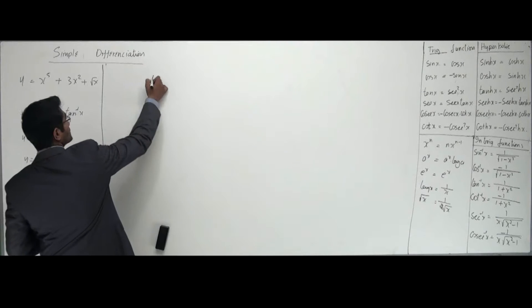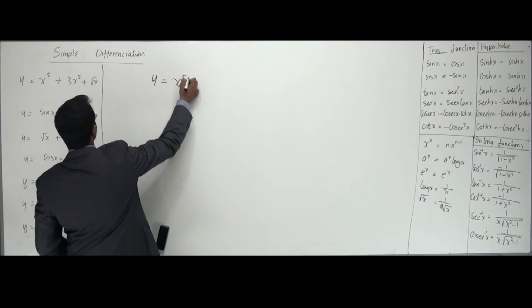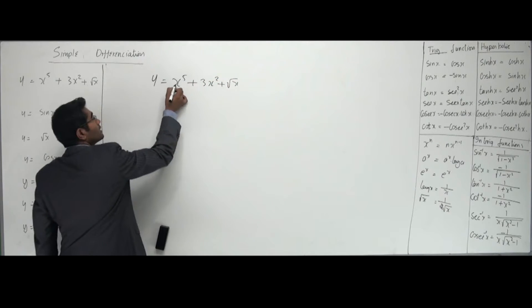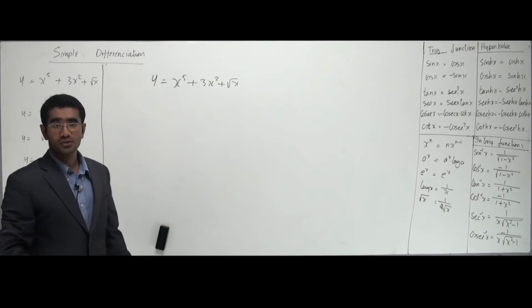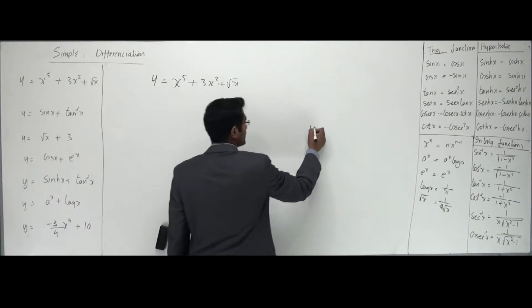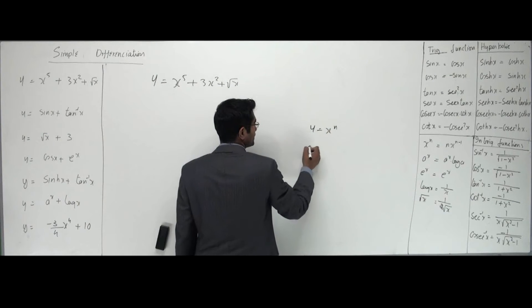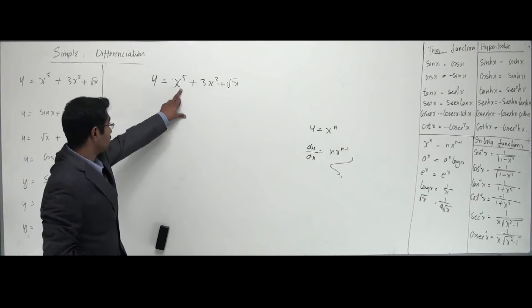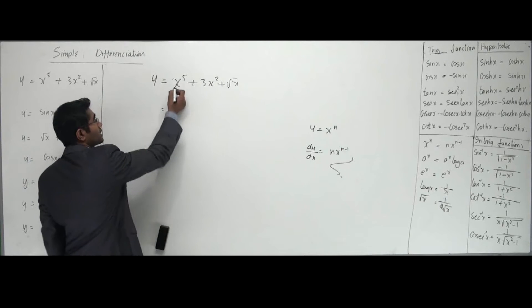Let's see how to work with this: y equals x to the power 5 plus 3x squared plus root x. I know that anything with algebraic functions we use only one formula: y equals x to the power n. Differentiation of this is what we already know: n times x to the power n minus 1. I can see that x to the power 5 looks like that, so individually I can differentiate.